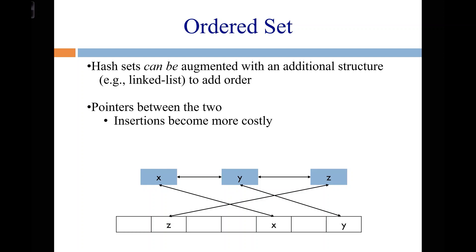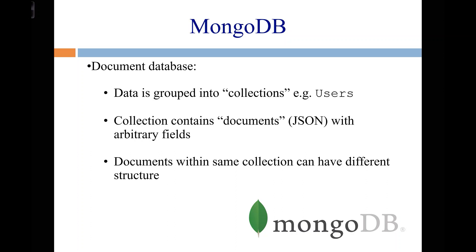It turns out C#'s dictionary data structure is an ordered set, but they don't tell you that. If you insert things in order one, two, three, and then iterate over the values, you're going to get them in order one, two, three. It really annoys me that they don't tell you about this, and students fresh out of 2420 think that a hash map is ordered. They are definitely not, unless it's something else. We're not really going to go into using Redis — we'll look more at MongoDB.